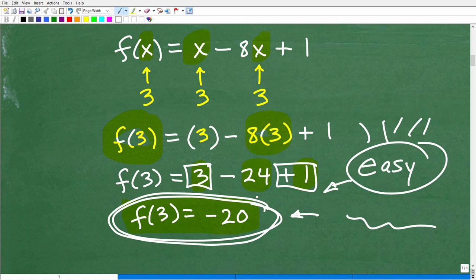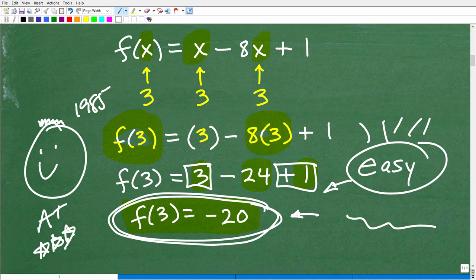But this is our final answer. So f of 3 is equal to negative 20. And if you got that right, I must go ahead and give you a nice, little, happy face for today with a good old 1985 flat top haircut and A+. Matter of fact, I'm going to give you a few extra stars so you have an extra special day. So nice job.